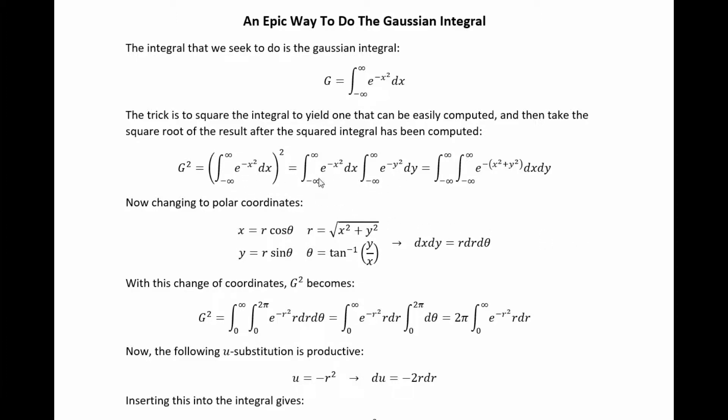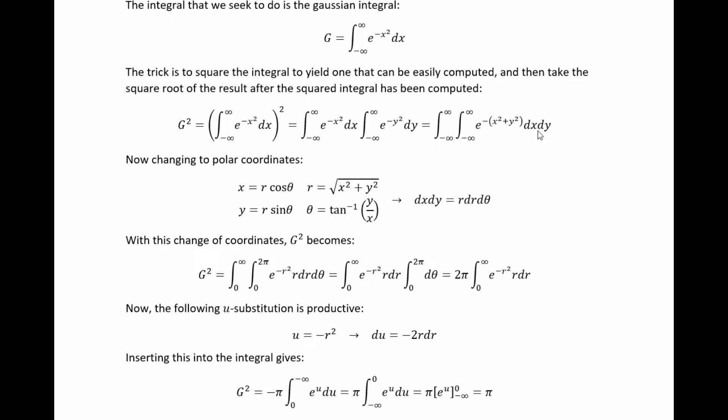So first, we can rewrite this square simply as this product of integrals. There's nothing stopping us from doing this because the variables we're integrating over are dummy variables. So we can change their name all we want. This thing still equals the same thing that it did when we still used x as the label for the integration variable. But the cool thing about doing it this way is then we can multiply it through like this and then change to polar coordinates.